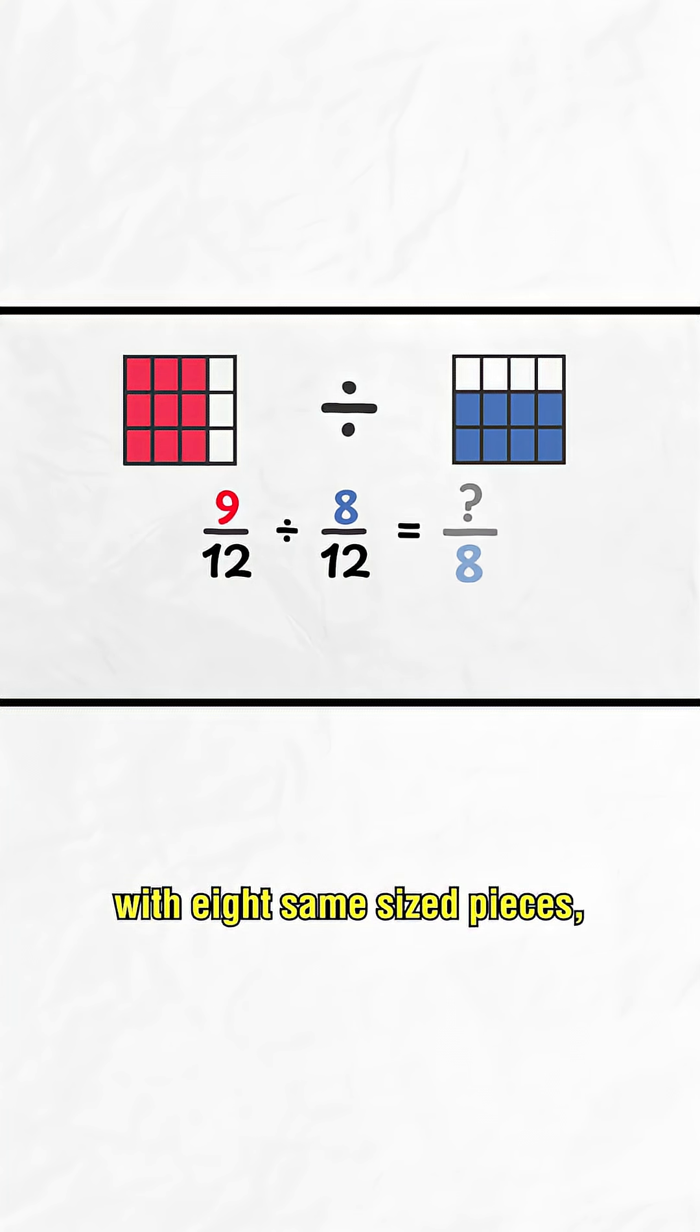We can make one full group with 8 same size pieces, and we have 9 pieces in total. Remember, the denominator tells you the number of equal sized pieces that make a whole, and the numerator tells you how many pieces you have. So the answer is 9 eighths.